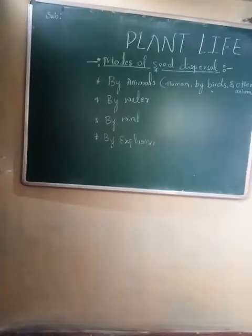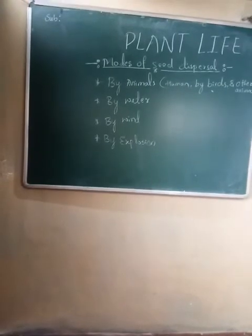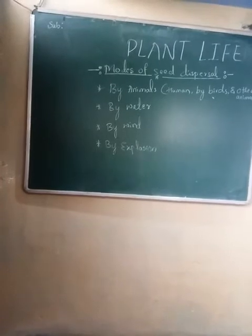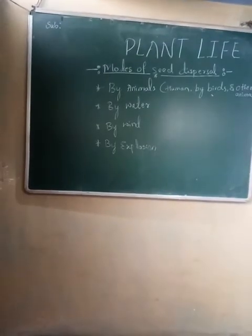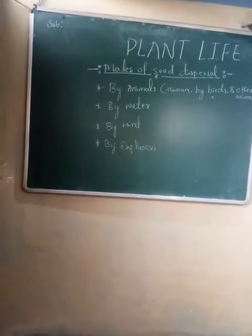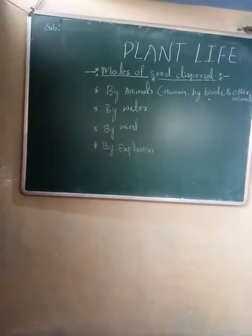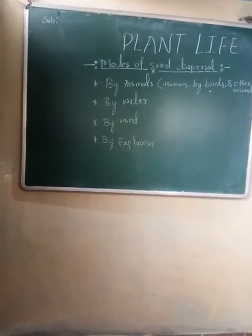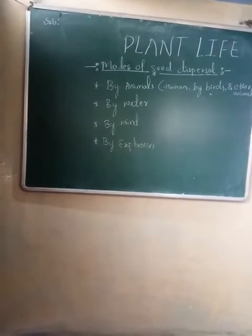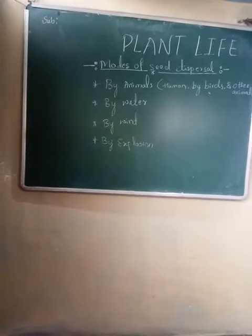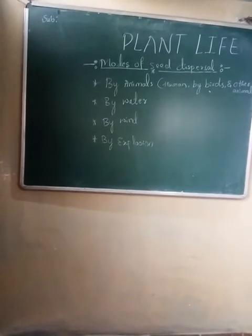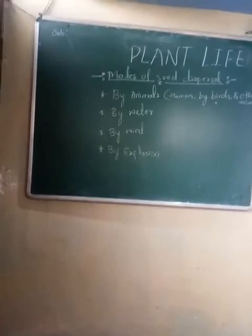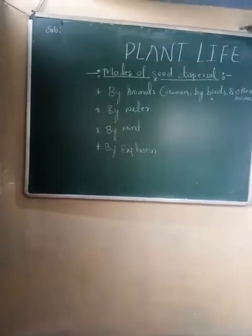The third type is by wind. With the help of wind, seed dispersal can take place. For example, seeds of some fruits are very light, like dandelion seeds and the seeds of the Indian elm plant. They can easily fly along with the wind and fall down where the wind stops. So in that particular place, it is possible for that seed to grow into another plant.